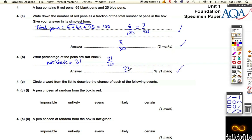Now it says circle a word from the list that best describes the chance of each of the following events. A pen chosen at random from the box is red. Well, there aren't very many red pens, so it's certainly not certain or likely, and it's not even evens. But it's not impossible—there are a few in there—so it must be unlikely.